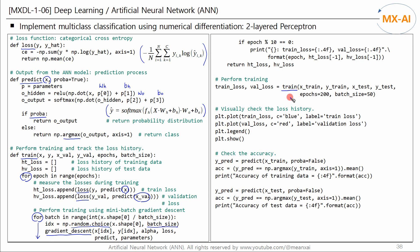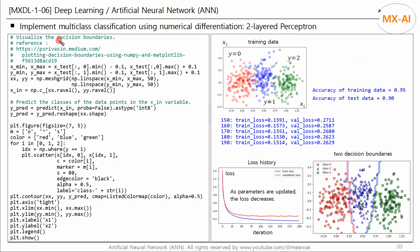Now we call the train function. The number of iterations is set to 200 and the batch size to 50. We then visually inspect the loss history measured during training, measure the accuracy on training and test data, and visually check the decision boundaries using code from the previous machine learning videos.